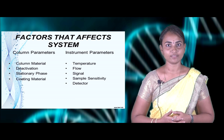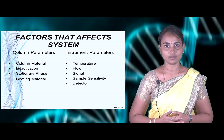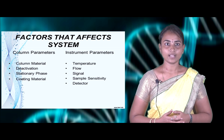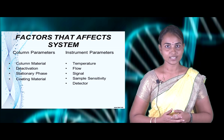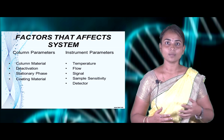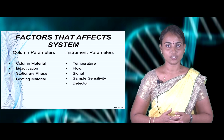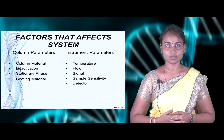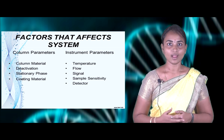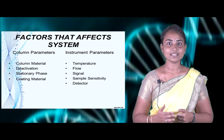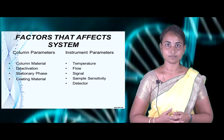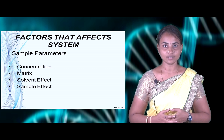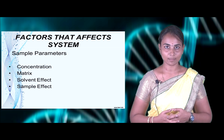There are some factors that highly affect liquid chromatography separation, which we have to check using chromatogram parameters. First, column parameters include column material selection, deactivation, and the material should be highly inert in nature, with optimal stationary phase and coating material. Instrumentation parameters include temperature, flow, signal parameters, highly sensitive parameters, and detectors. Sample parameters that must be checked include concentration of the sample, matrix, solvent effect, and sample effect.